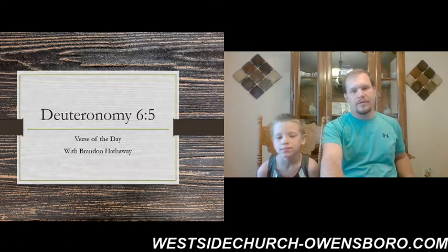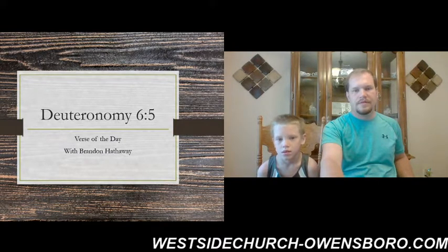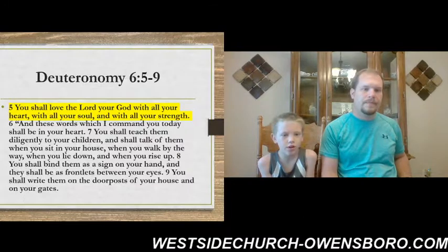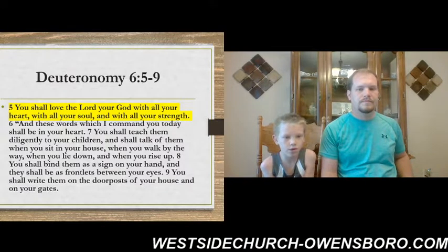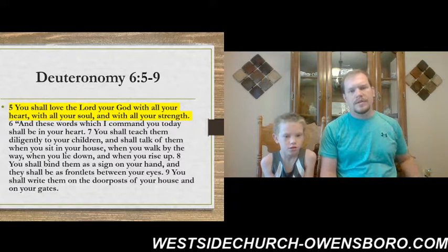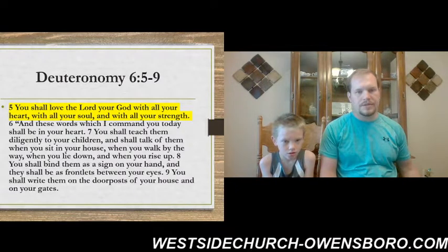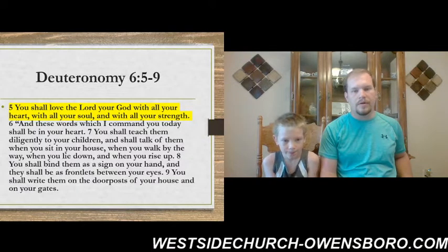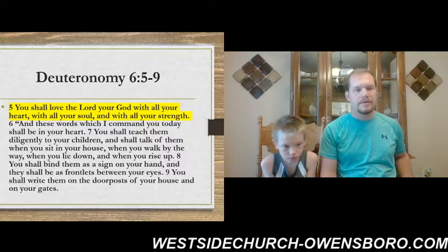Deuteronomy chapter 6 and verse 5 is what we're looking at today. Josiah wants to read the first couple: "You shall love the Lord your God with all your heart and with all your soul and with all your strength. And these words which I command you today shall be in your heart. You shall teach them diligently to your children and shall talk of them when you sit in your house, when you walk by the way, when you lie down, when you rise up. You shall bind them as a sign on your hand and they shall be as frontlets between your eyes. You shall write them on the doorposts of your house and on your gates."